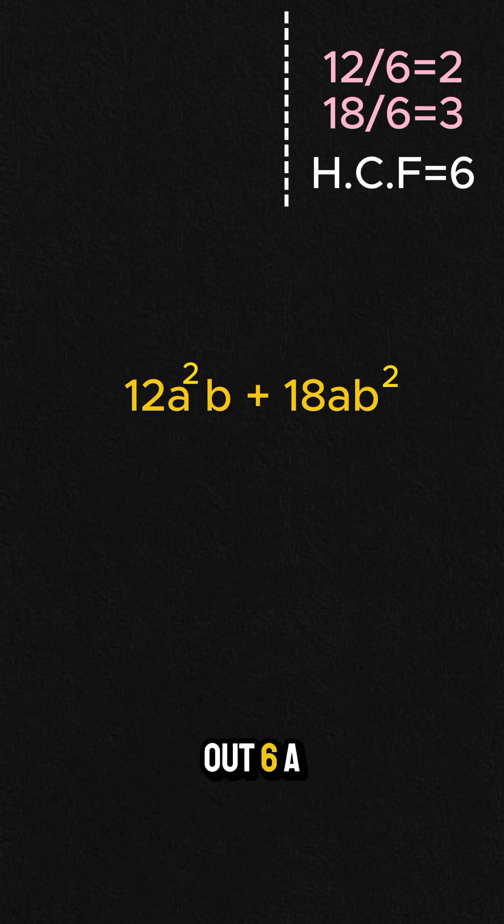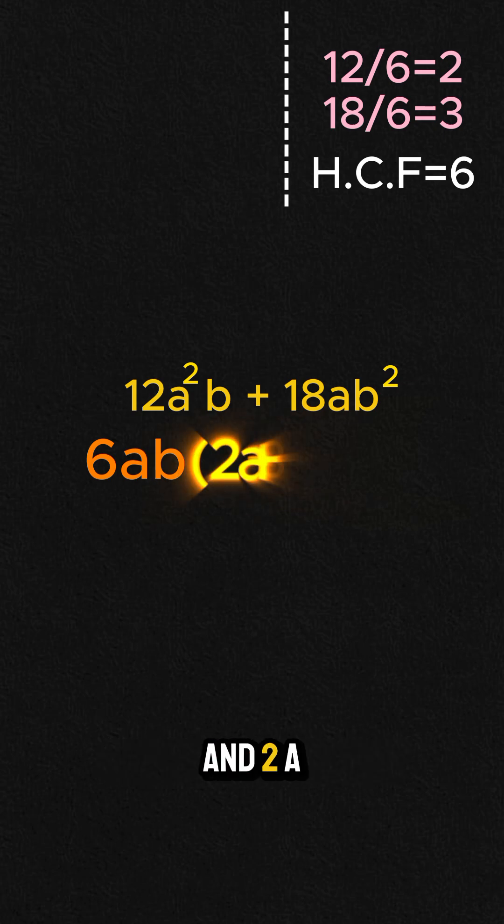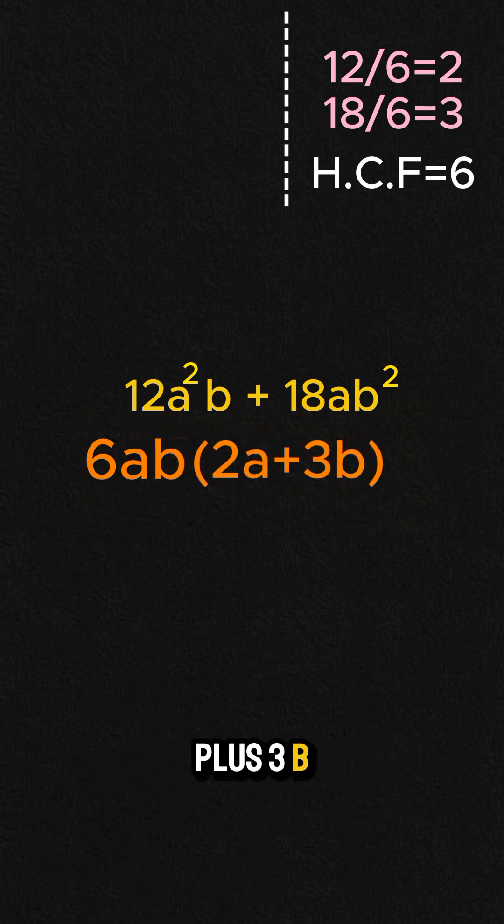So we pull out 6ab. So we get the factorized form, which will be 6ab outside the bracket and 2a plus 3b inside the bracket.